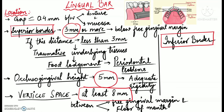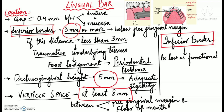The inferior border of the lingual bar should be as low as the lingual tissues and the functional depth of the floor of the mouth will permit. The methods to measure the functional depth of the floor of the mouth were discussed in a previous video, the link for which is provided in the description box.